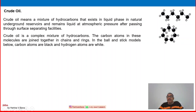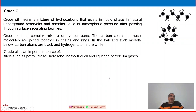In the ball-and-stick models, carbon atoms are black and hydrogen atoms are white. Various hydrocarbon structures exist in organic chemistry, like methane, ethane, propane, and butane.